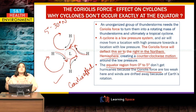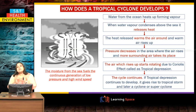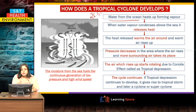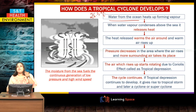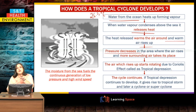Tropical cyclones develop over the ocean. The ocean must be warm — the sea surface temperature should be more than 26.5 degrees Celsius. As warm air rises, it forms clouds. When the air rises and cools, it condenses and releases heat. This heat warms the surrounding air, causing pressure to decrease further in that area, drawing in more air from the surroundings.